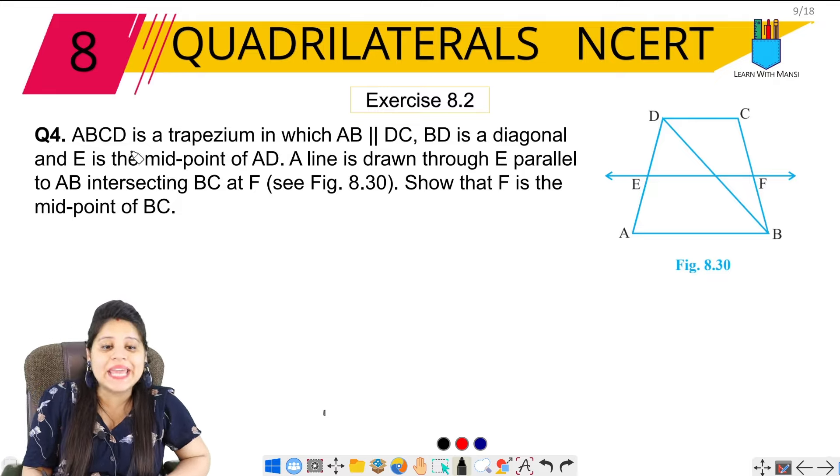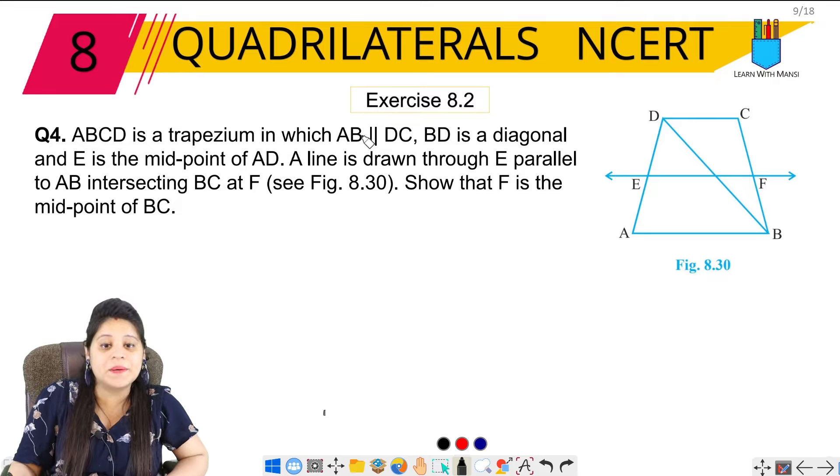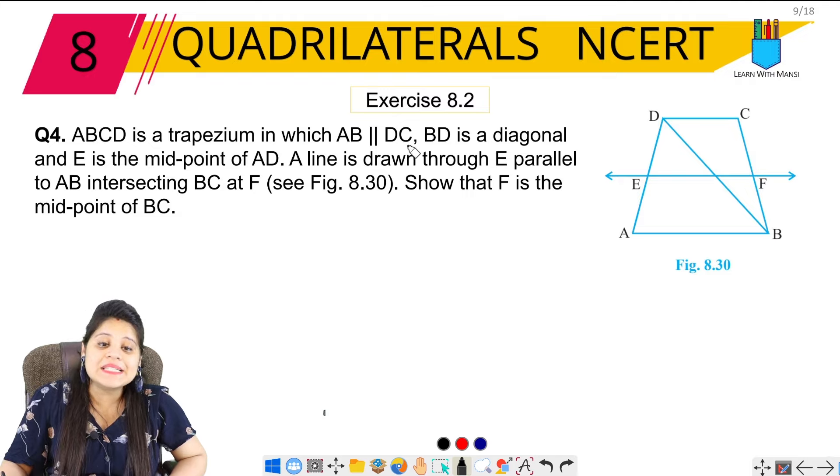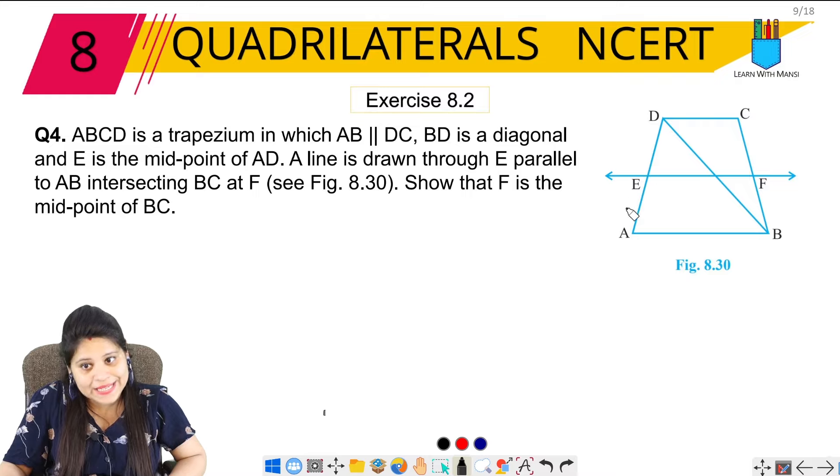The question says ABCD is a trapezium in which AB is parallel to DC. So this AB is parallel to DC. This is the whole trapezium. BD is a diagonal and E is the midpoint of AD.